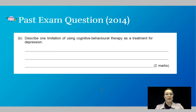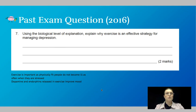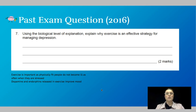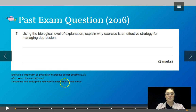Now for some past exam questions. From 2014, worth two marks: describe one limitation of using CBT as a treatment for depression — pause here and take two minutes to answer. From 2016, this was a bit of an odd question because the SACE outline says nothing about exercise. It's an application-style question rather than a knowledge question, worth two marks, and there are some ideas at the bottom of the screen for you.